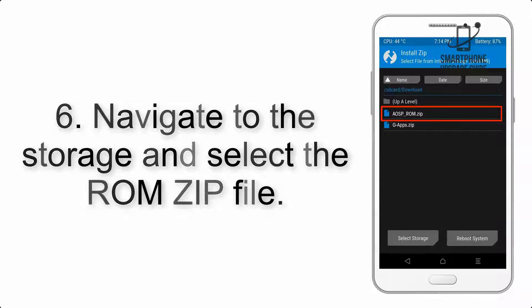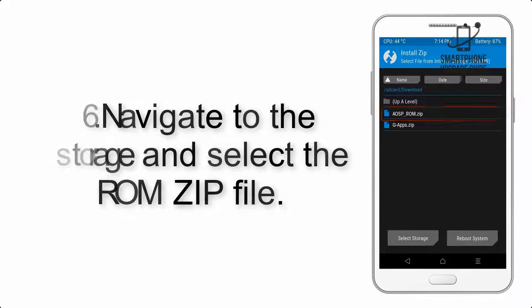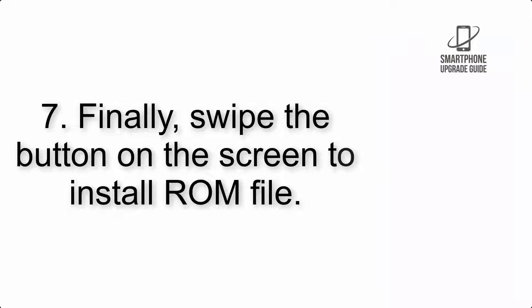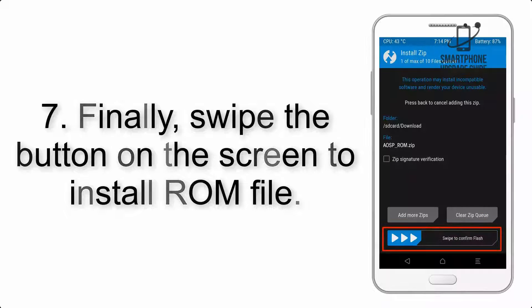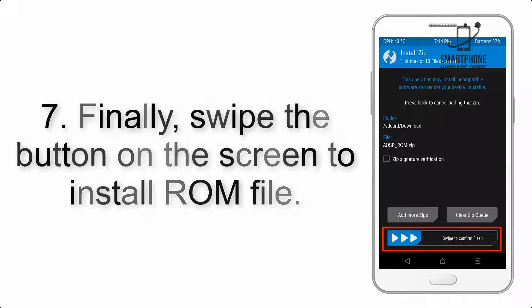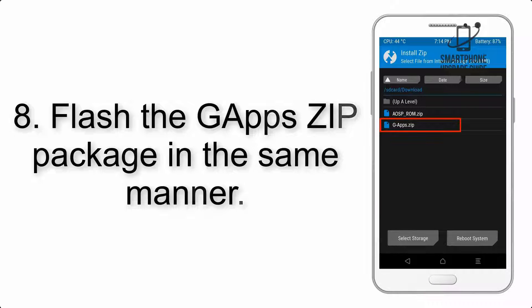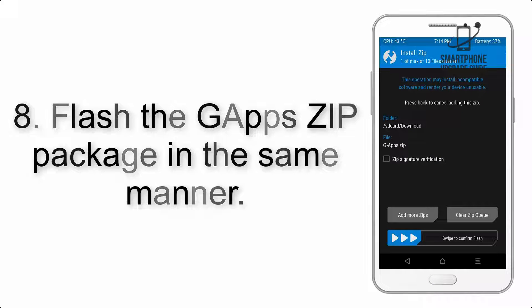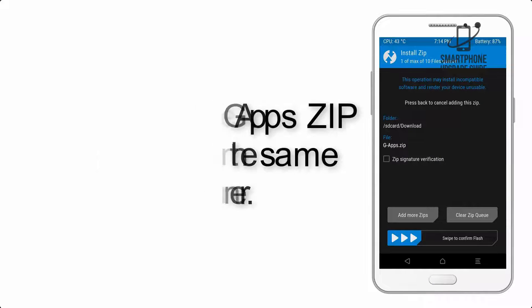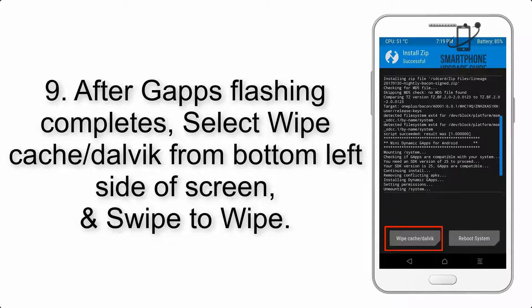Step 5: Go back to the recovery main screen and tap on the Install button. Step 6: Navigate to the storage and select the ROM zip file. Step 7: Swipe the button on the screen to install the ROM file. Step 8: Flash the GApps zip package in the same manner.